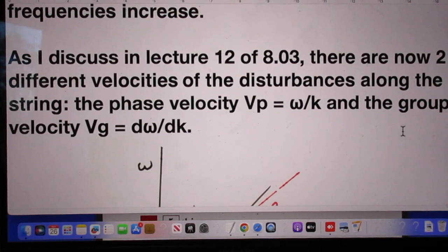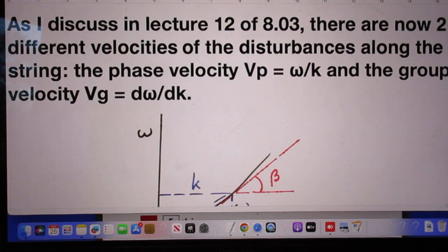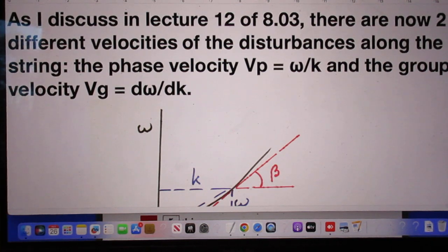As I discuss in lecture 12 of 803, there are now two different velocities of the disturbances as they move in the direction of the string. One we call the phase velocity, vp, which is omega divided by k, and the other is the group velocity, which is dω/dk.